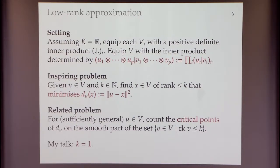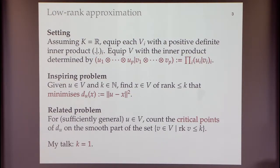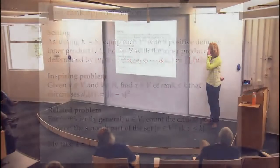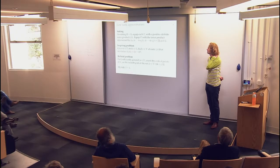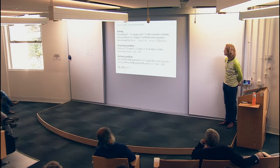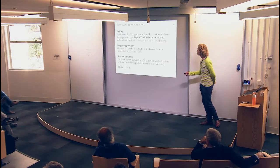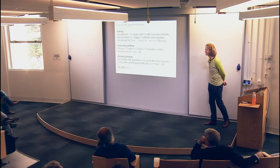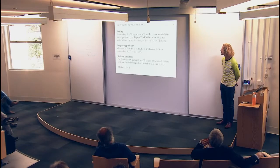Does this minimum depend on your choice of inner product? The best approximation will change if you change the inner product. But if it comes from inner products on the Vi's — I'm not sure, let me get back to that. Certainly the value of the distance might be different, but the question is whether the minimizer X itself changes. That's a good point; let me think about it.